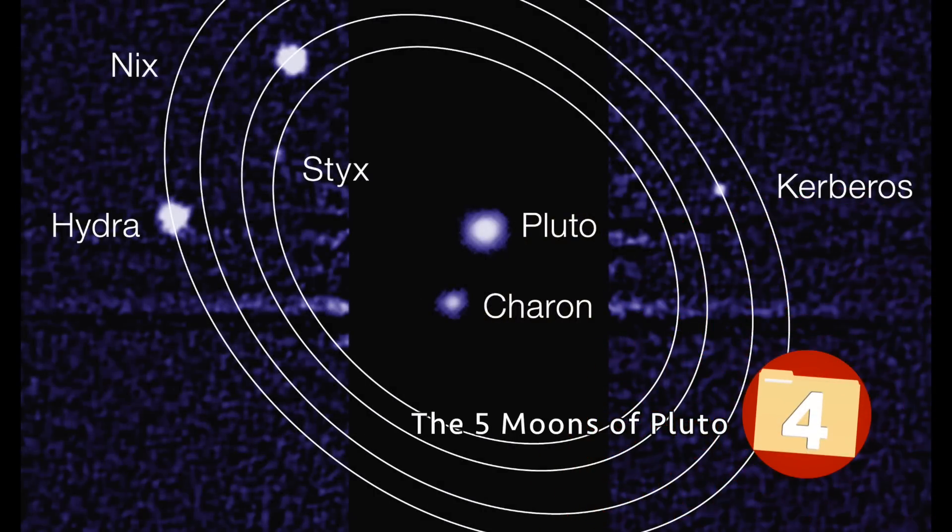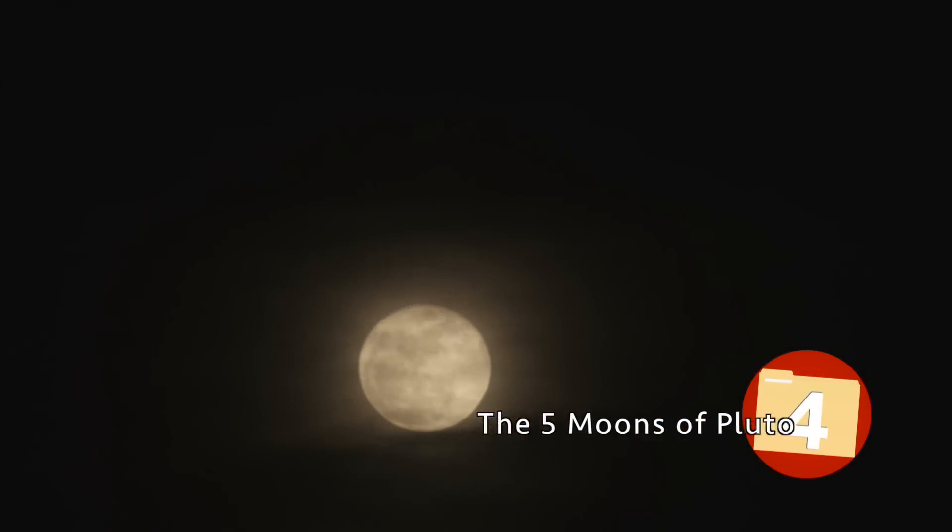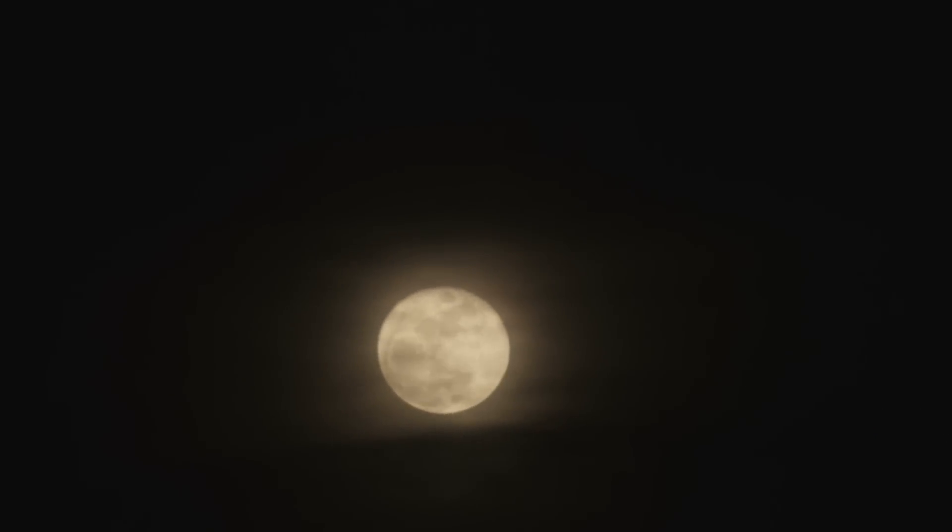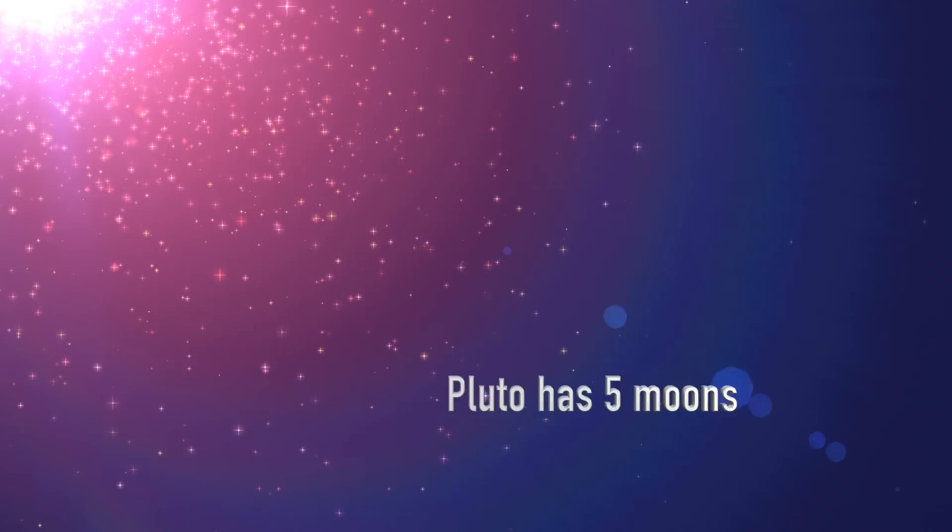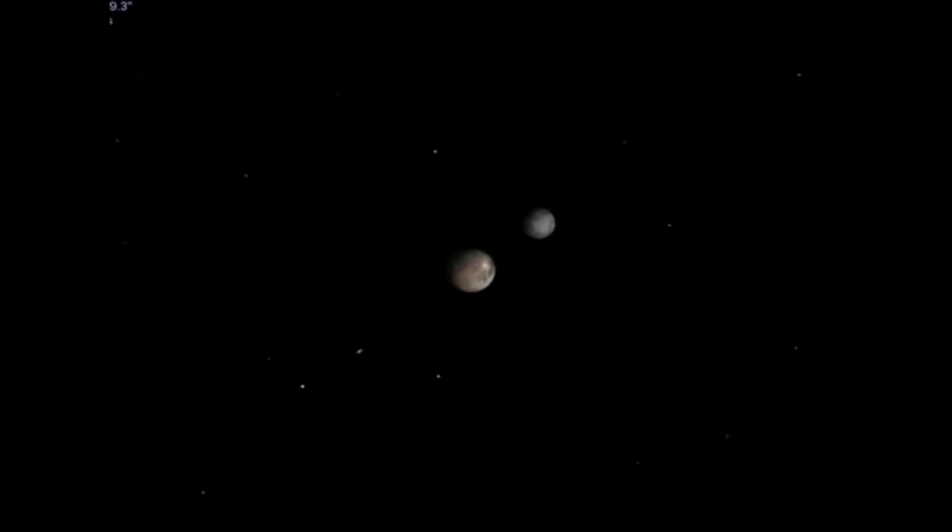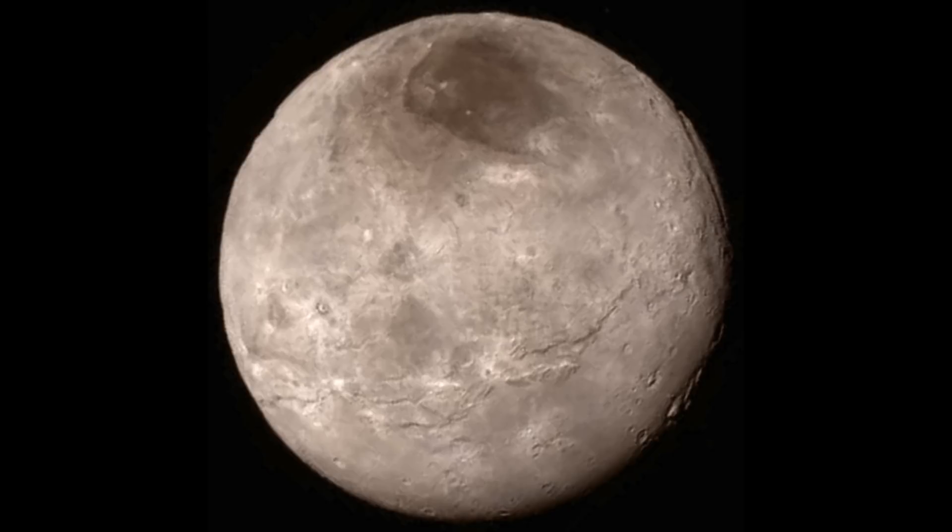The Five Moons of Pluto. Where Earth only gets to enjoy the sight of one glowing moon, the dwarf planet of Pluto has five different moons. It's believed that, at one point in time, Pluto collided with another body in space, which caused material to disperse and create the five satellite moons.